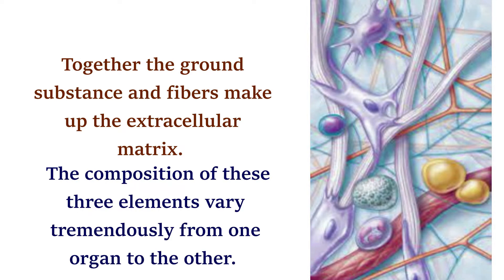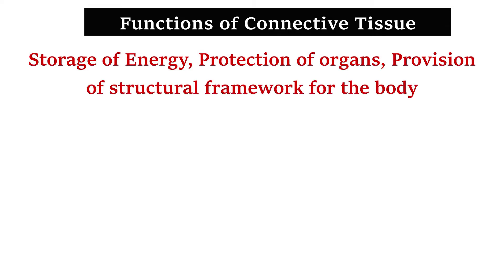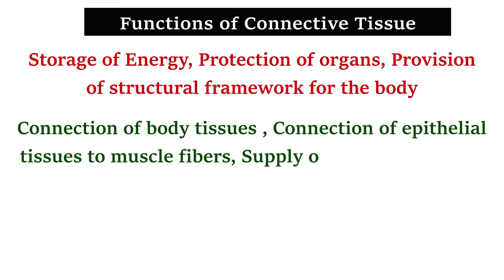Together, the ground substance and fibers make up the extracellular matrix. The composition of these three elements varies tremendously from one organ to the other. Functions of connective tissue include storage of energy, protection of organs, and provision of a structural framework for the body.